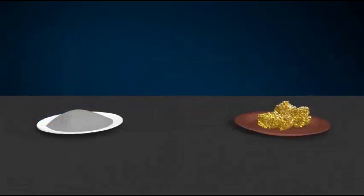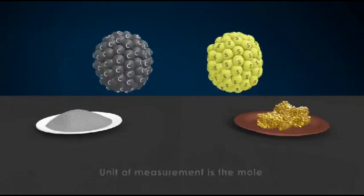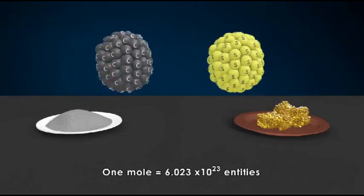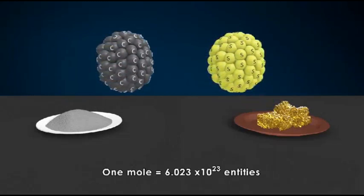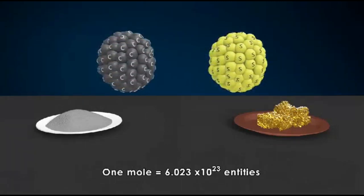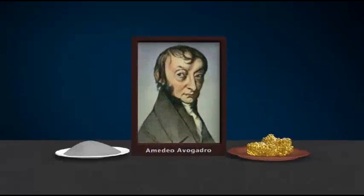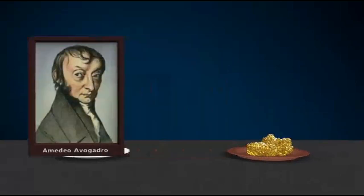In chemistry, the term amount refers to the number of entities in a sample. And the unit of measurement is the mole. One mole is the amount of a substance that contains 6.023 × 10²³ entities of that substance. The number is Avogadro's number, named after the 19th century chemist Amedeo Avogadro.